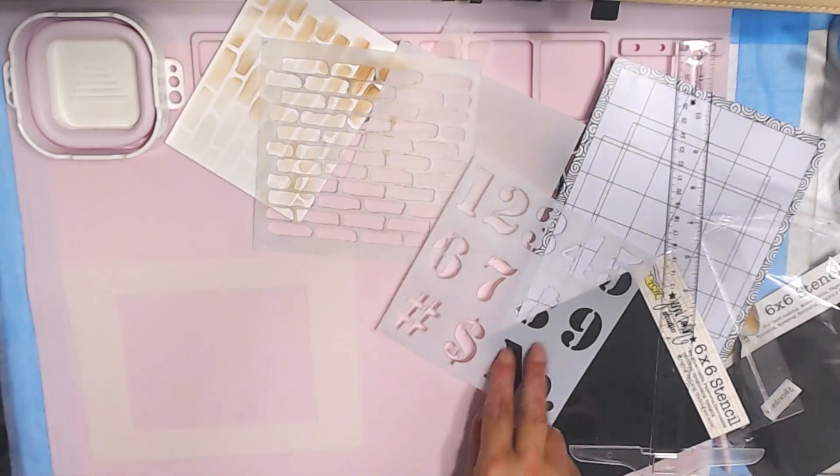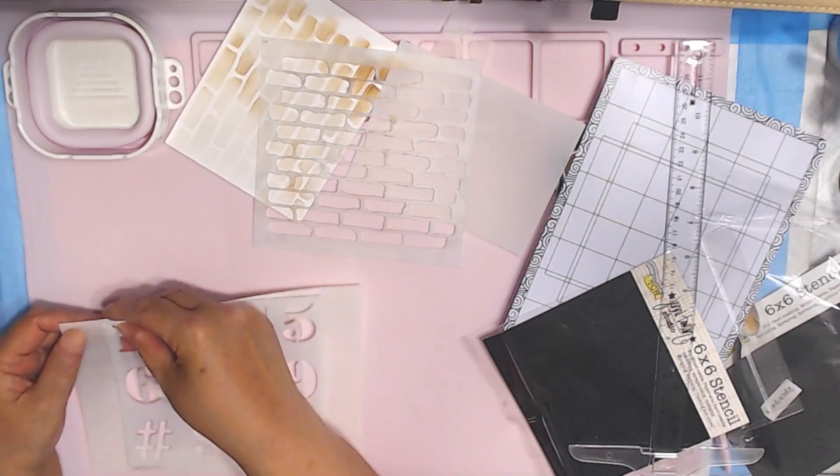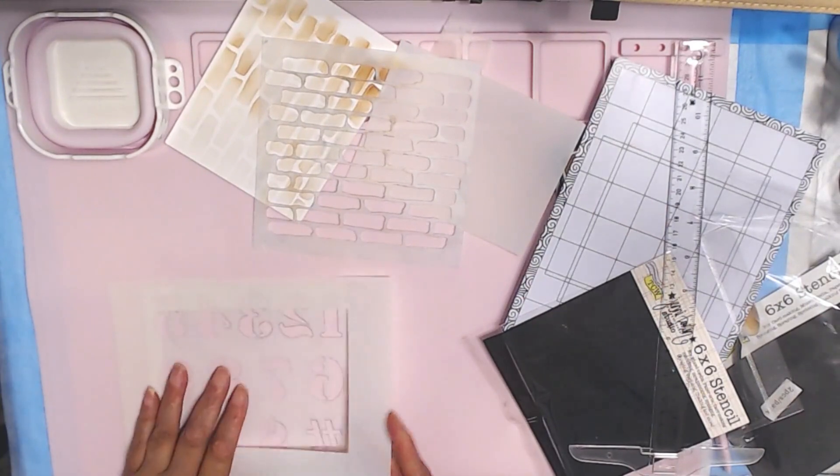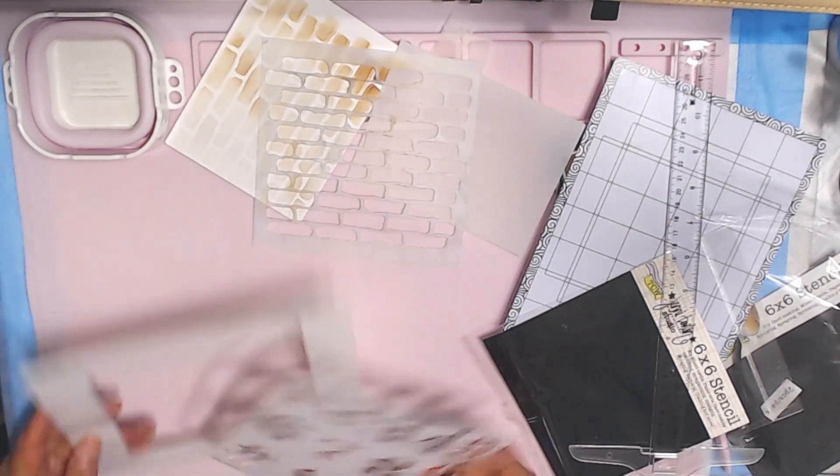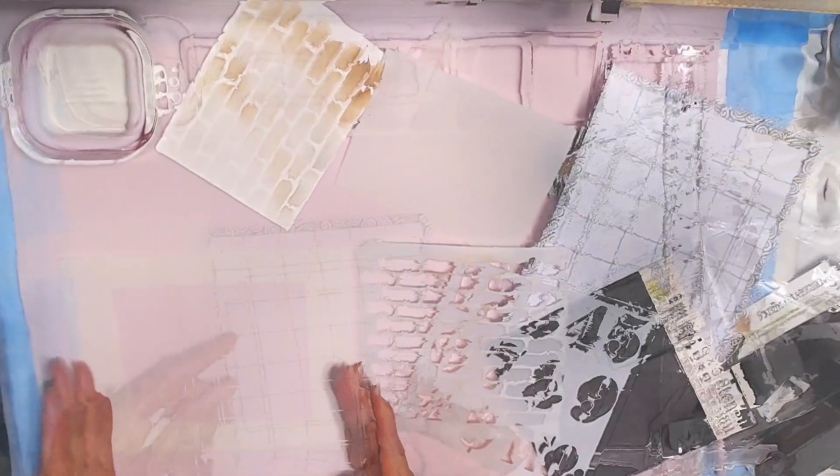So what I did was I just put the stencil on one end like this, and then I put it down on the mat so that the stencil was sticking on the mat on top of the paper, and that held it in place. If it's going to hold a 6x6 stencil, these tabs need to be a little farther out.